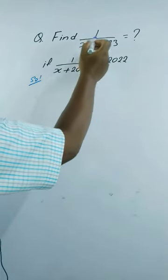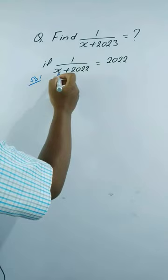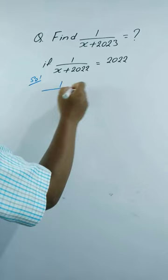Find 1 by x plus 2023, if 1 by x plus 2022 is equal to 2022. Solution: 1 by x plus 2022 is equal to 2022.